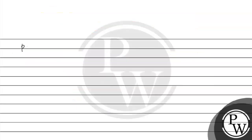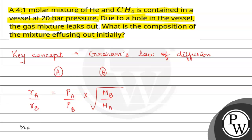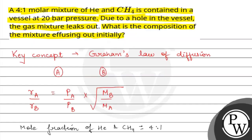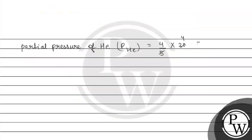First we will find the partial pressure of helium. This will be equal to P(He). Since the mole fraction of helium to methane is given as 4:1, the partial pressure of helium will be 4/5 multiplied by total pressure 20 bar, which gives 16 bar. Similarly, partial pressure of CH4 will be 1/5 multiplied by 20, which equals 4 bar.